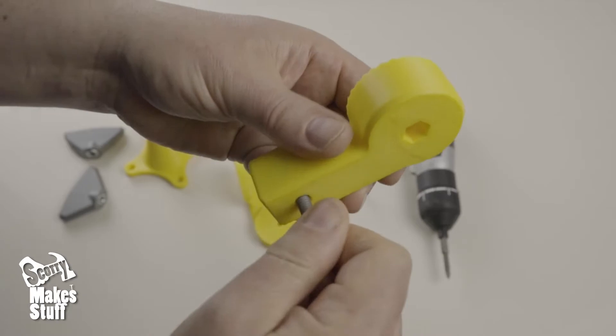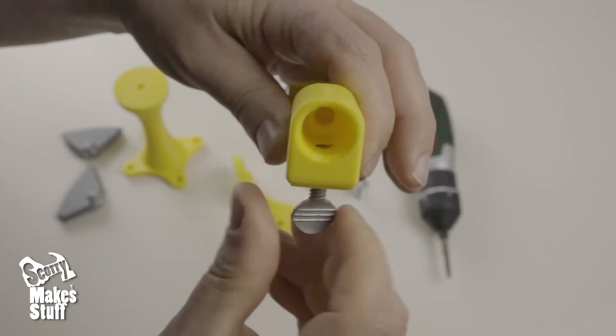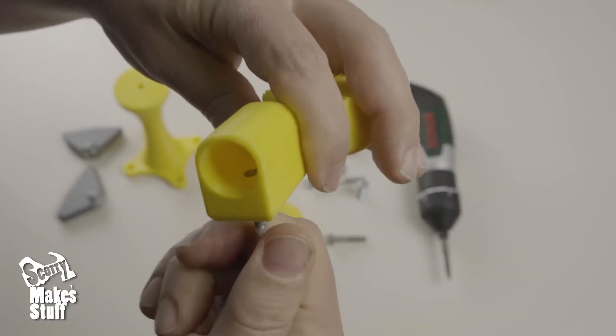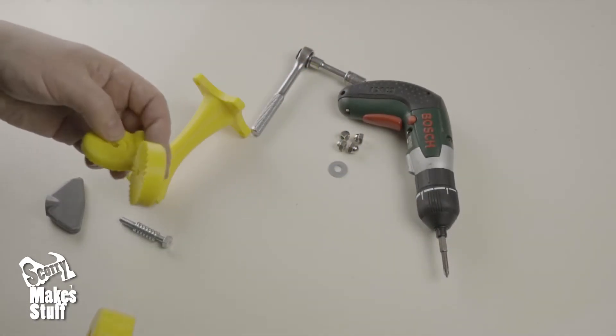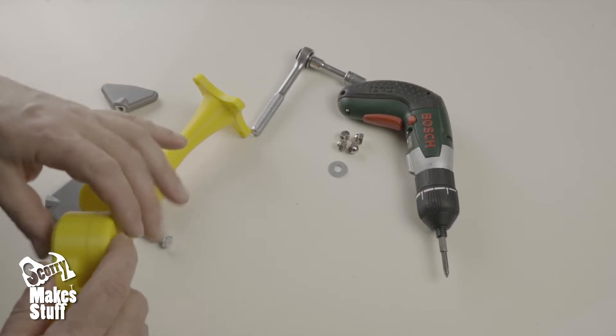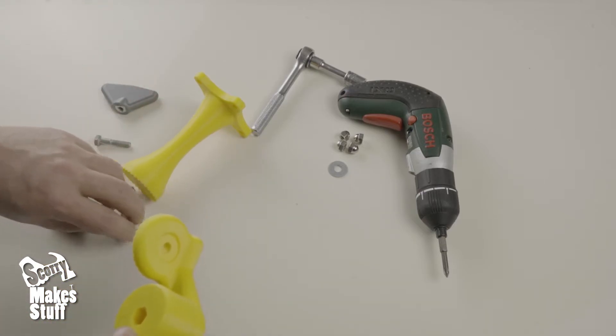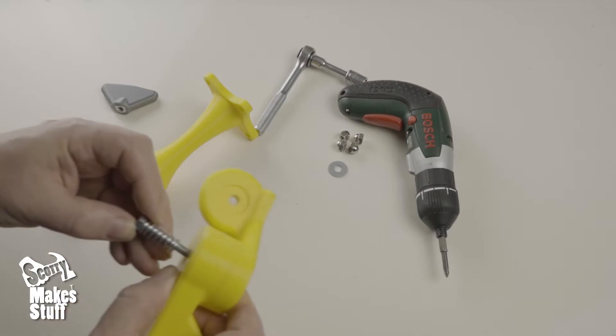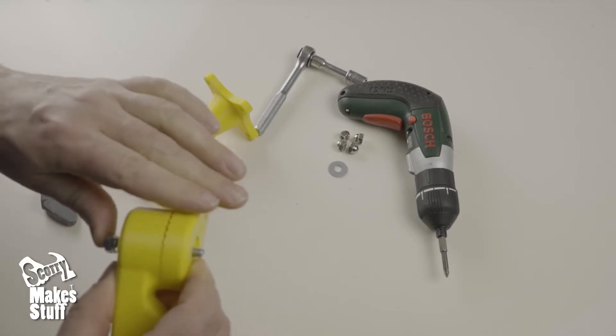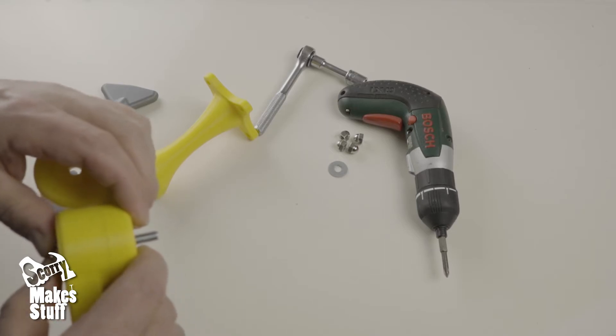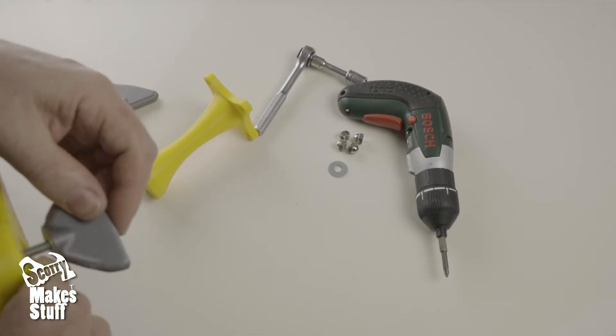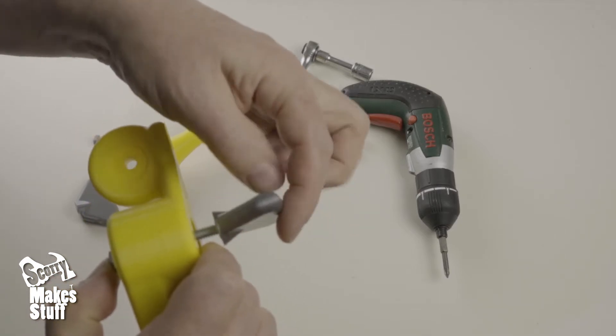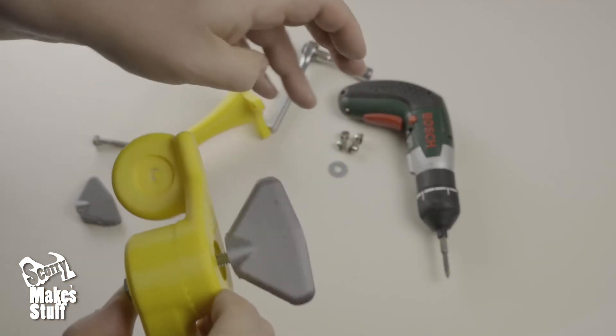And we'll start by screwing in the toggle bolt into the light mount. Next we'll attach the light mount to the elbow. We're using the two and a half inch bolt with that spring. The beauty of having the spring is that it adds a bit of back pressure, so you don't have to crank it all the way down and it can still hold the weight of the light sword.